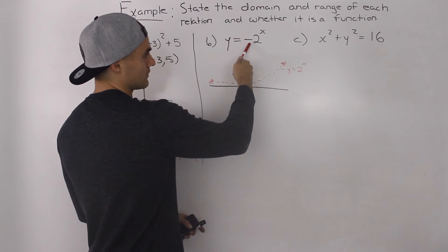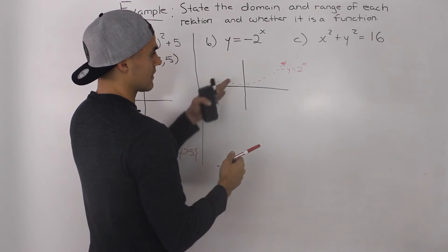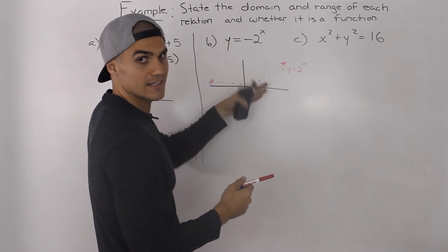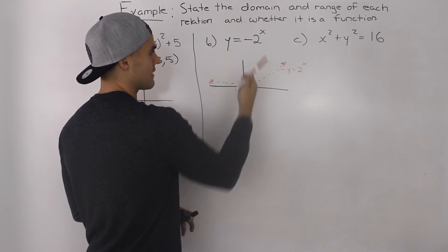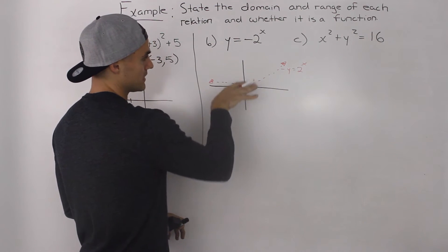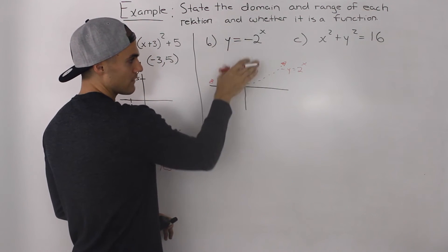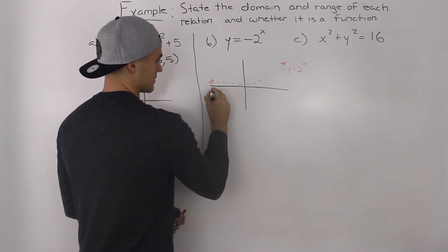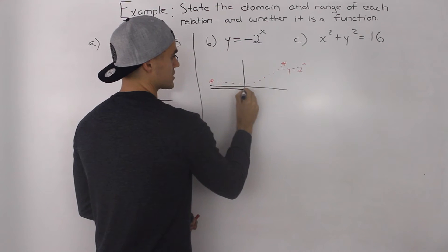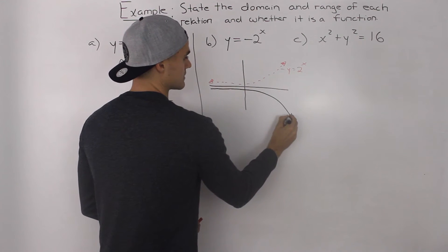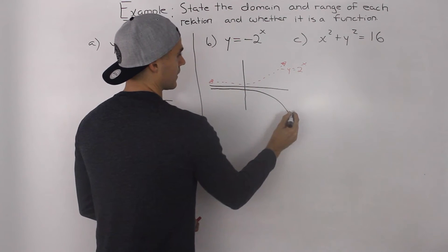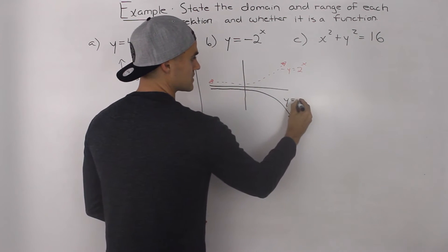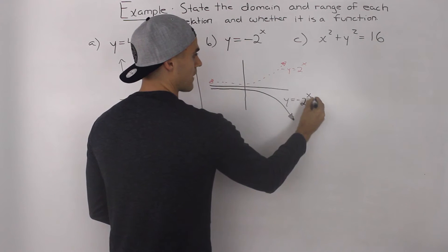Now this negative here means that the exponential function is reflected in the x-axis, right? The a value is negative. So basically, all of the positive y values here, they all turn negative. So this relation would look something like this. All right, it's just 2 to the power of x reflected over the x-axis. So this here represents negative 2 to the power of x.